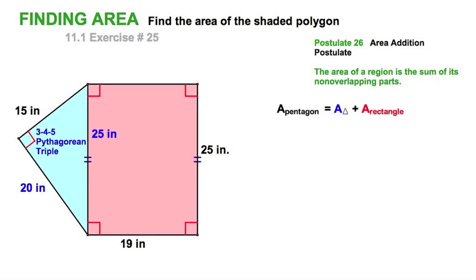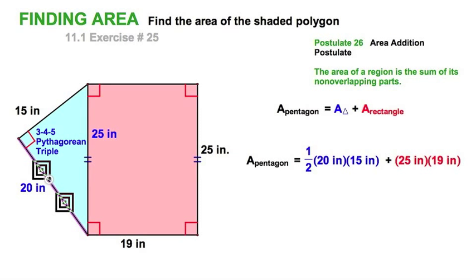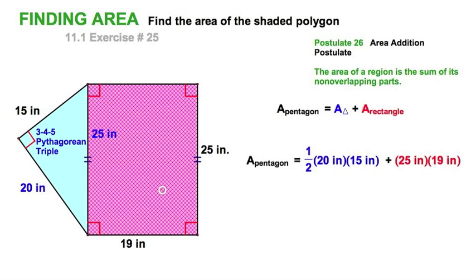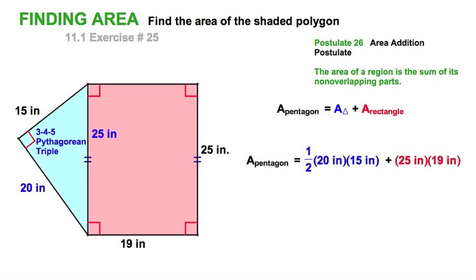And that's all we needed. And now we'll just make our substitution. Again, the area of the triangle is 1 half base times height. Base and height in either order are 20 and 15. And base and height in either order are 19 and 25 for the red figure, or the rectangle.